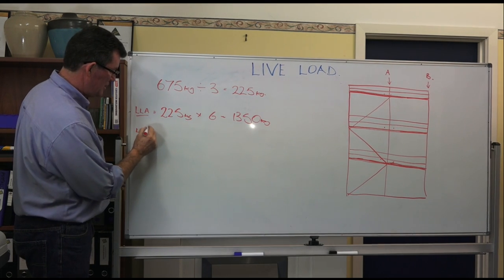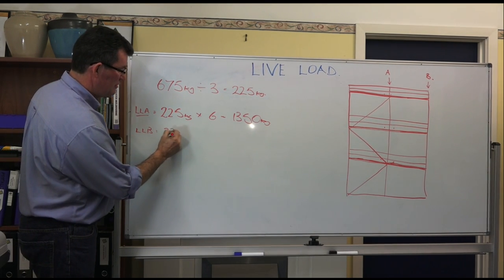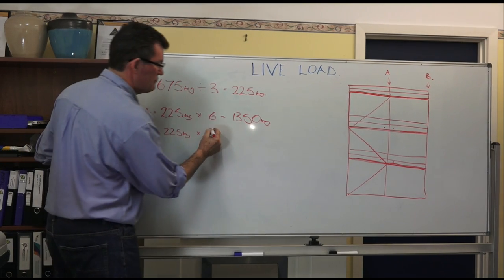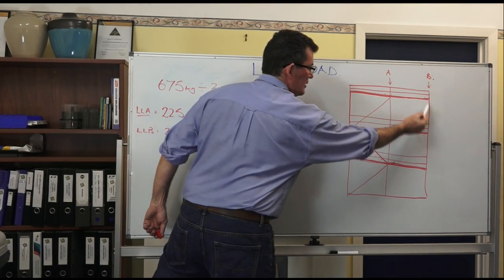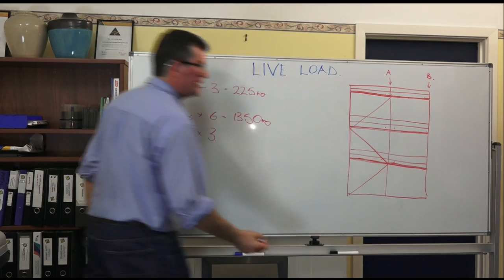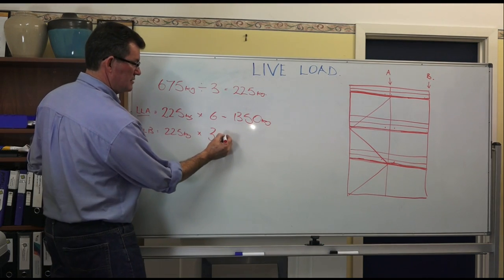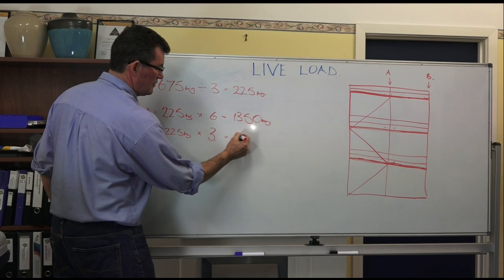Live load B equals 225 kilos times 3 because there are three working levels attached to standard B. So that gives me 675 kilos.